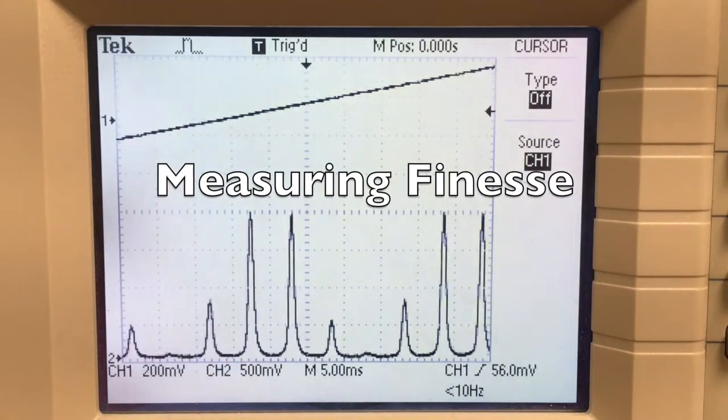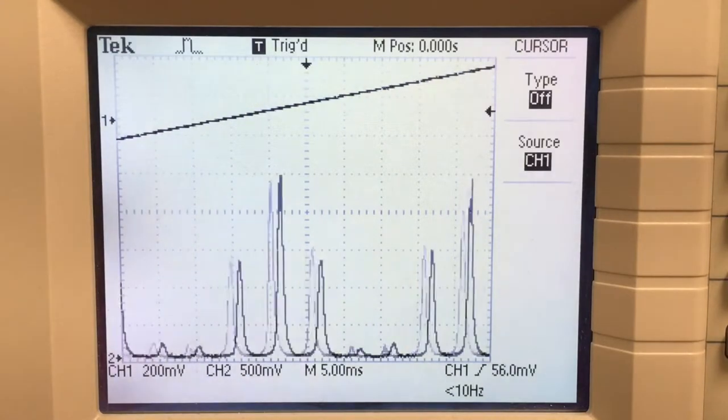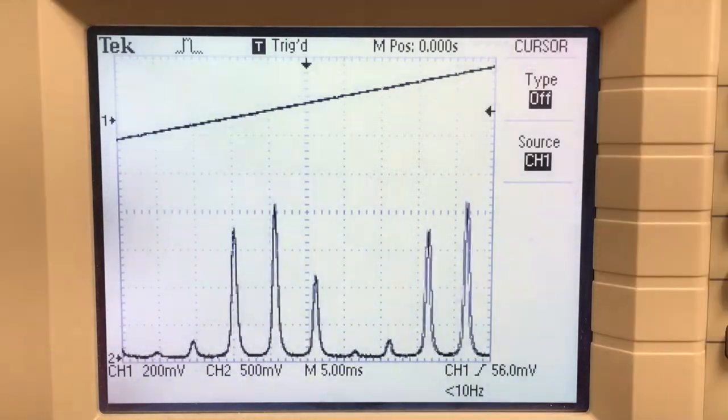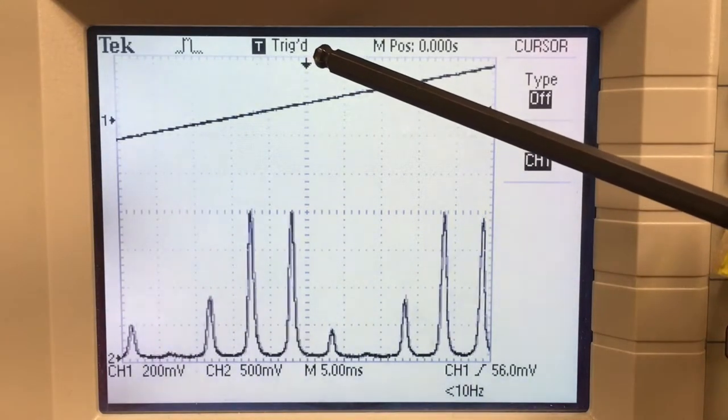Finally, we want to try to measure the width of one of these peaks. And so here's a little scope trick for you. This little arrow shows you where t equals zero is, where the scope is being triggered.